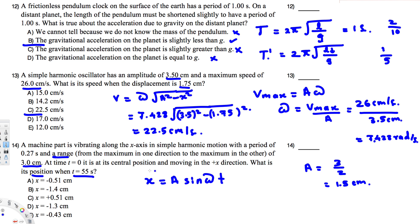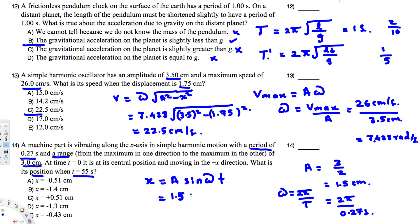For omega: ω = 2π / T = 2π / 0.27 seconds. Now we have all the information. Plugging in: x = 1.5 cm × sin((2π / 0.27) × 55). Since position is in centimeters, no unit conversion is needed.